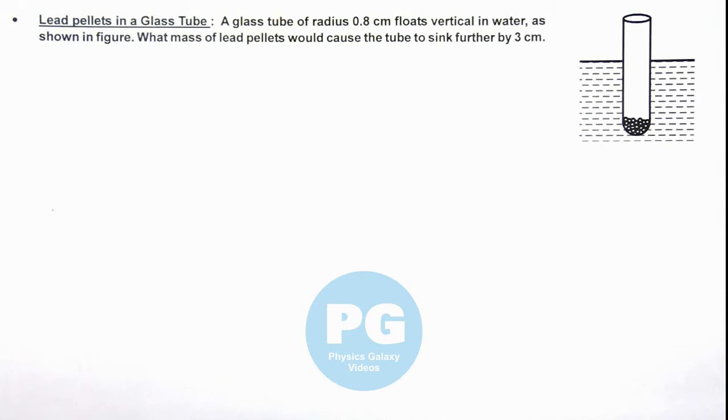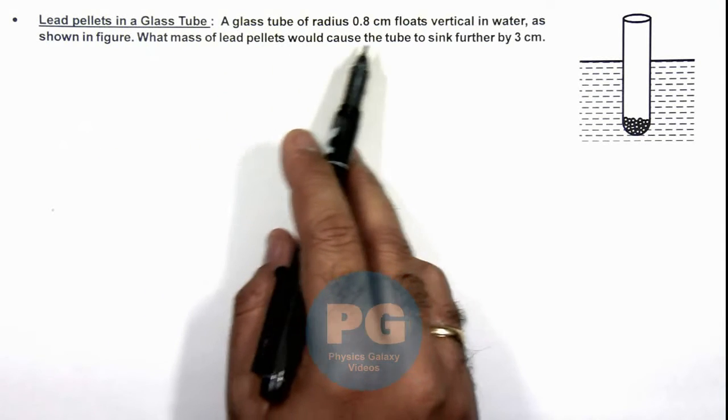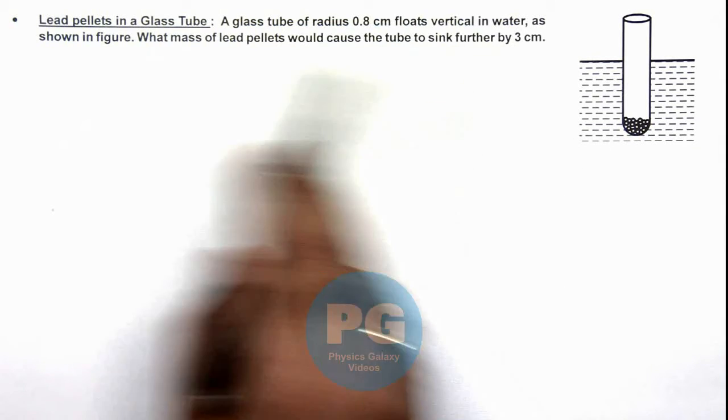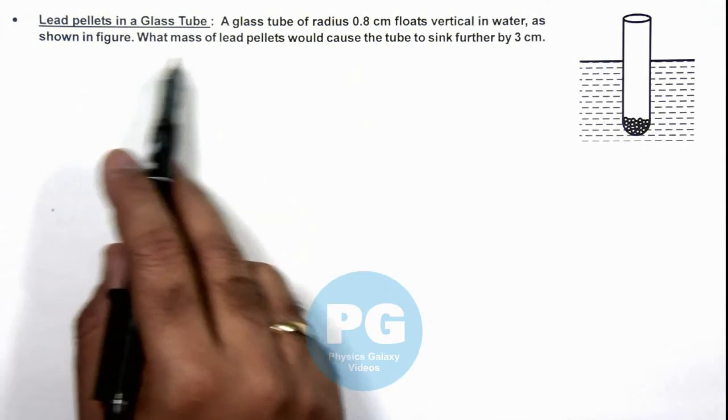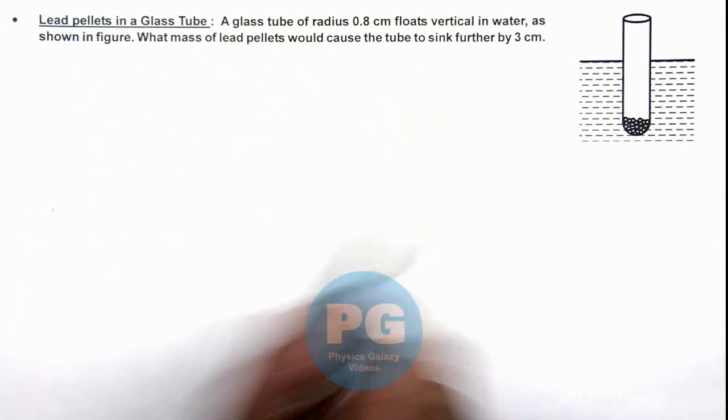In this illustration we'll analyze lead pellets in a glass tube. We are given that a glass tube of radius 0.8 centimeter floats vertical in water, as shown in figure. We are required to find what mass of lead pellets would cause the tube to sink further by 3 centimeter.